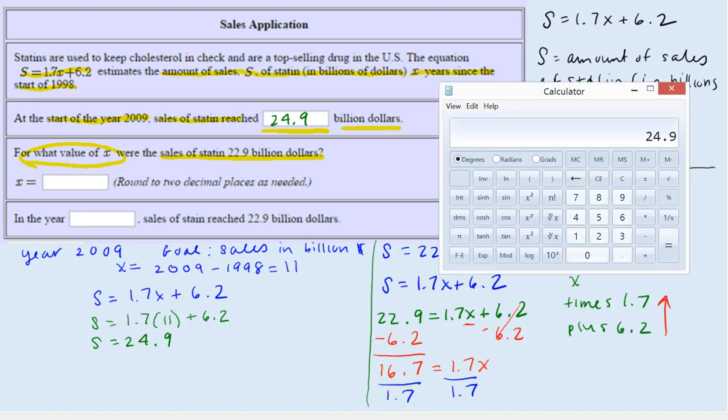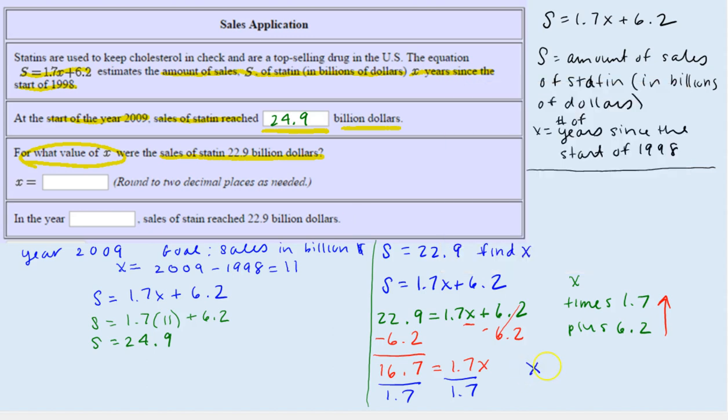Let's do this on the calculator. 16.7 divided by 1.7 gives this value. Now I'm going to see what they said about rounding. It says round to two decimal places as needed. So that would be 9.82. X equals 9.82.